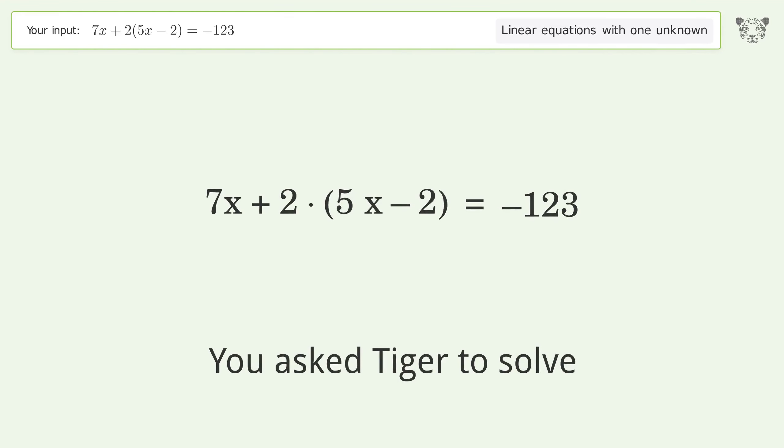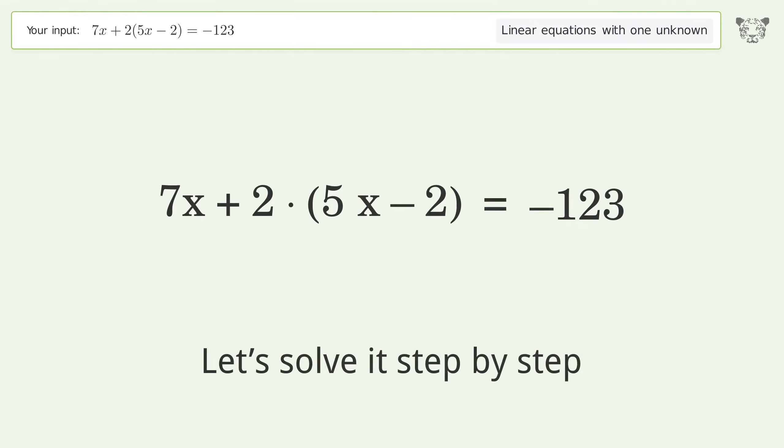Tiger will solve this linear equation with one unknown. The final result is x equals negative 7. Let's solve it step by step and simplify the expression.